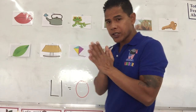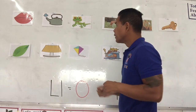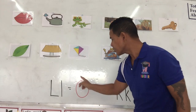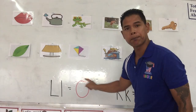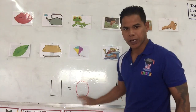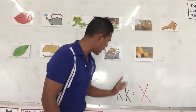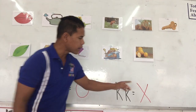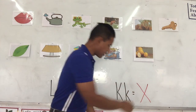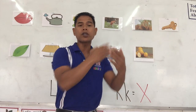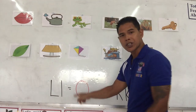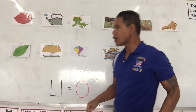In this activity, for the letter L we will circle the picture. For the letter K we put an X on it. For the letter K we use an X. For the letter L we circle it.